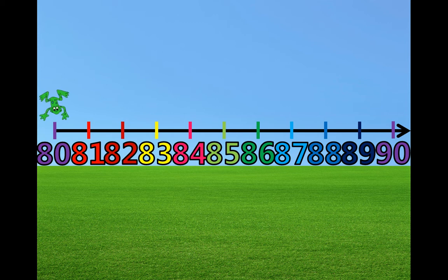This is Froggy the Frog. He likes to jump around on the number line. He is going to help us count from 80 to 90 on the number line. You can help him count too. When he jumps, you can say the number with us. Ready Froggy?